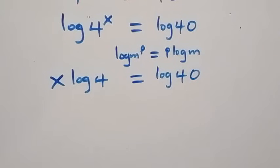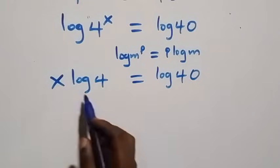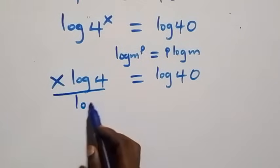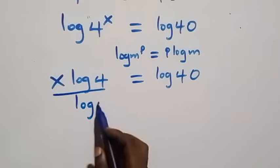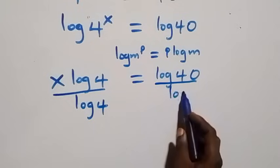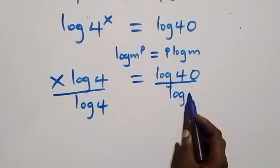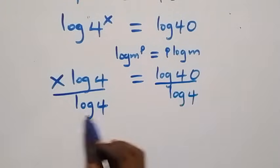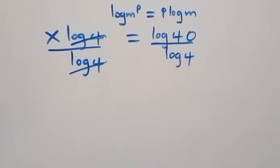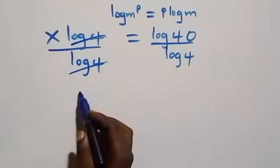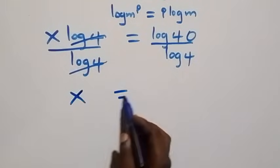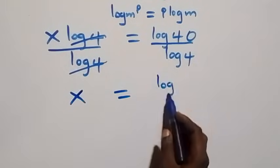At this step we divide both sides by log four, and divide this side by log four as well. This implies log four cancels each other and we are left with x equals to log forty.